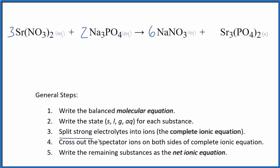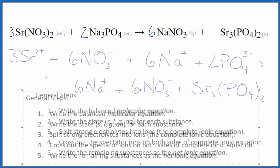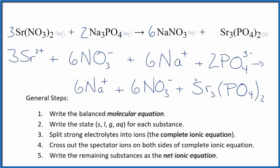Now we can split the strong electrolytes into ions for the complete ionic equation. And we don't split solids apart in net ionic equations. So we're gonna keep our strontium phosphate together. That looks like this. So this is the complete ionic equation.